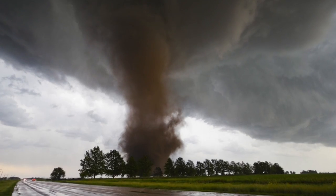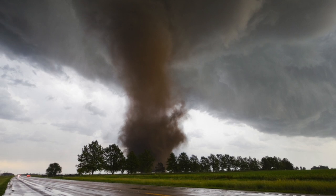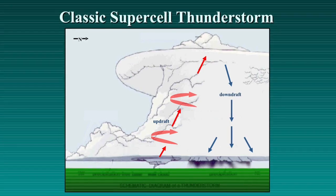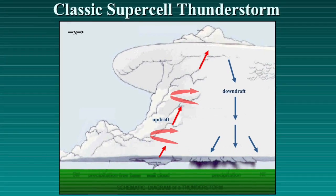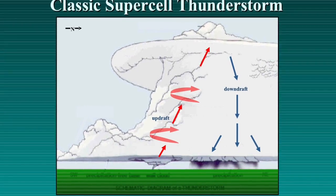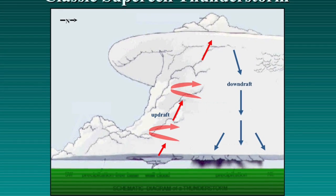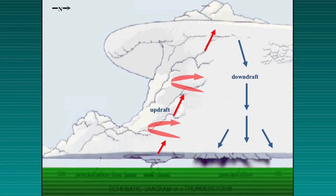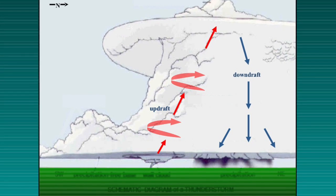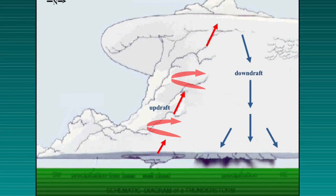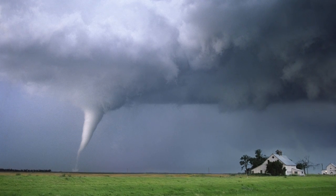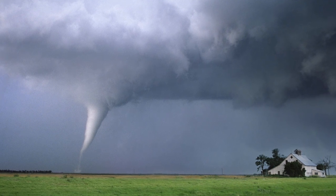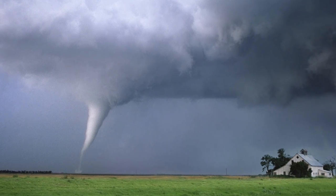The most violent type of weather storm on planet Earth is a tornado. Meteorologists tell us that the unstable air in a thunderstorm produces updrafts and downdrafts, which interact with wind shear to ultimately create a tornado vortex. But many scientists acknowledge that the exact processes that cause a tornado remain mysterious.